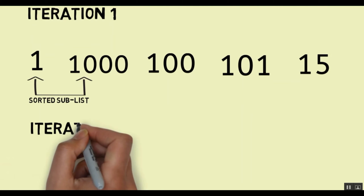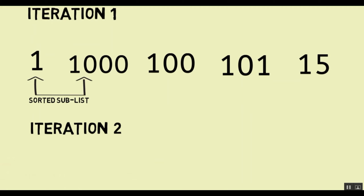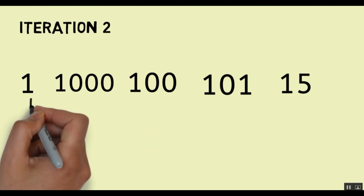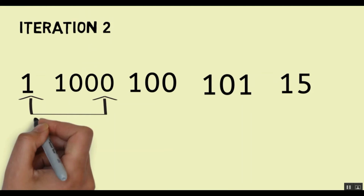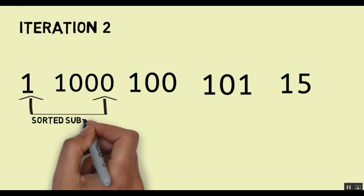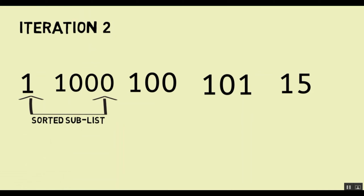Next we move to iteration 2. In iteration 2 we bring down the numbers and we now have 1 and 1000 as part of the sorted sublist. As you might have noticed, iteration 2 has 2 numbers in the sorted sublist: 1 and 1000. So at the end of the nth iteration, n numbers will be in the sorted sublist.